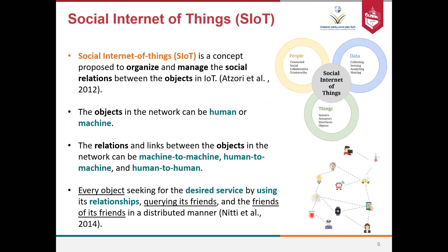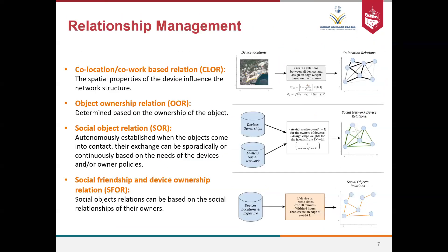The Social Internet of Things is a concept to organize and manage the social relationships between objects — and objects include not only sensors and devices, but also humans. Relationships can be machine-to-machine, human-to-machine, and human-to-human. Every object in the IoT is seeking a desired service using its relationships, which helps us query friends and friends-of-friends in a distributed manner.